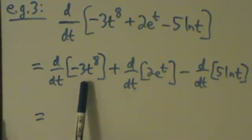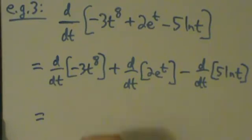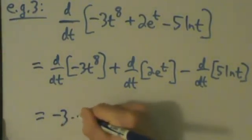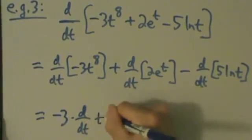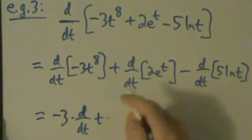Here, -3 is just a constant, right? So we can just pull it out of the derivative. So that's -3 times d/dt of t^8.